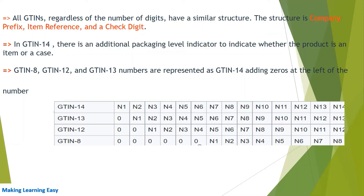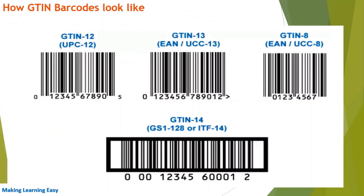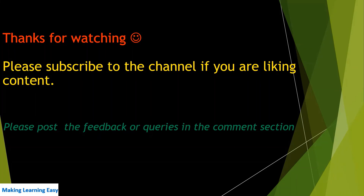You can convert GTIN-8 and GTIN-12 into GTIN-14 by adding zeros at the start. This is not mandatory — you can still use your old GTINs like UPC. In future, they might make this mandatory. Looking at how GTIN barcodes look: GTIN-12, GTIN-13, GTIN-8, and GTIN-14 — these barcodes are what you see on products like a bottle, pen, or pencil. That's all for this session. Thanks for watching, see you in the next video.